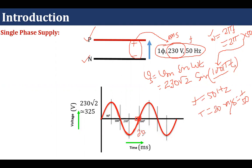So this is 20 milliseconds. Half of this waveform will be completed at 10 milliseconds. It will have a positive peak at 5 milliseconds and a negative amplitude at 15 milliseconds, assuming it starts at t = 0. The positive amplitude is 230√2, which is approximately equal to 325 volts. Similarly, the negative peak will be −325 volts.